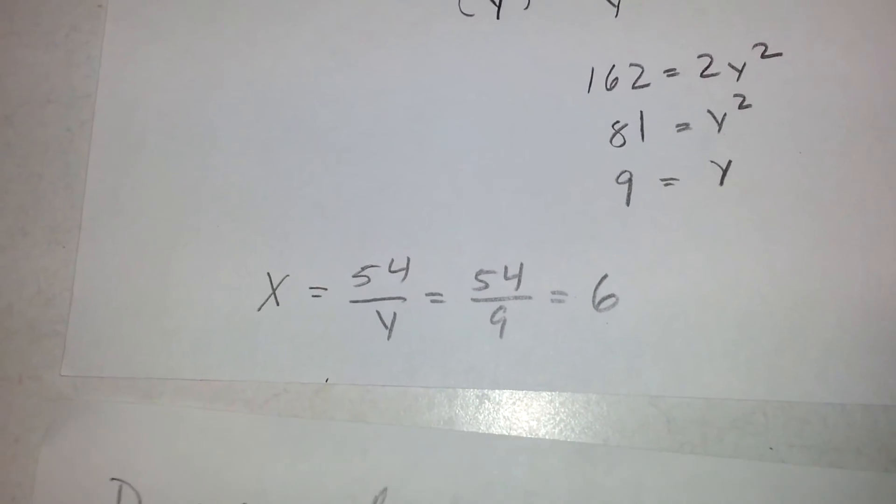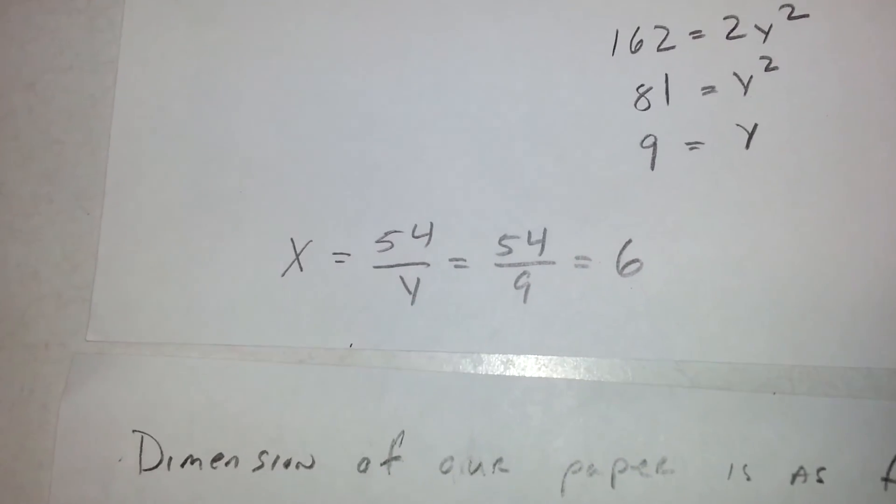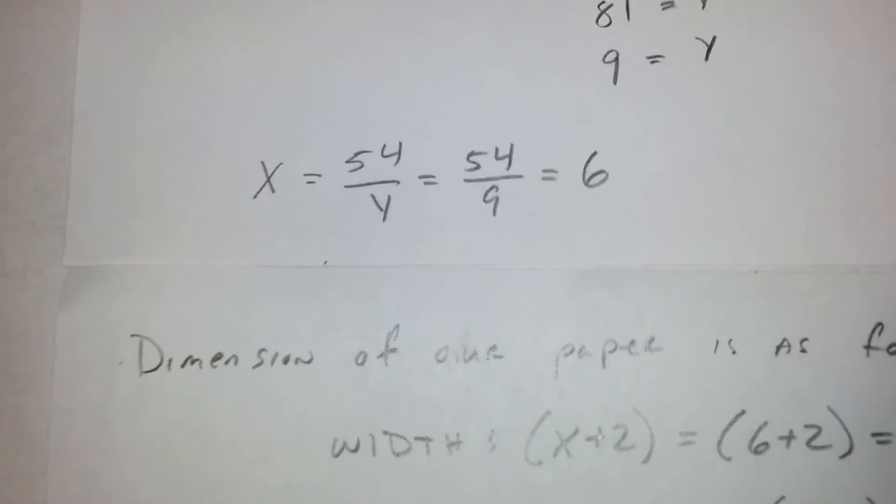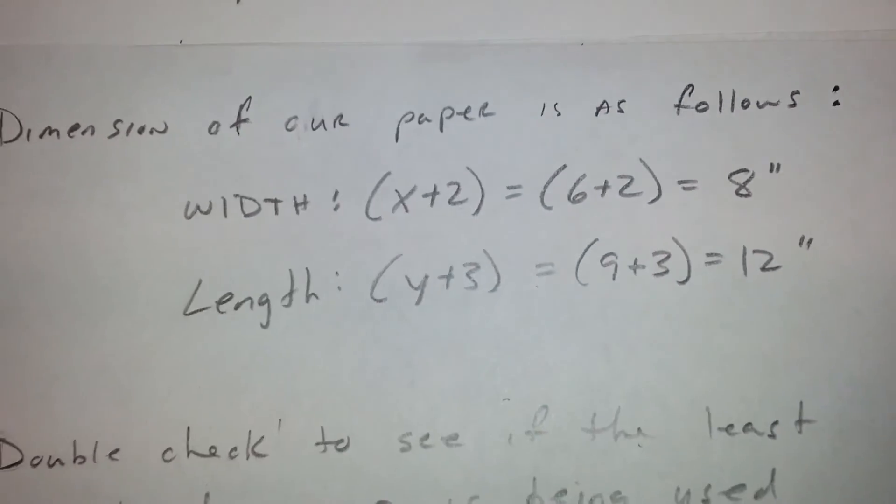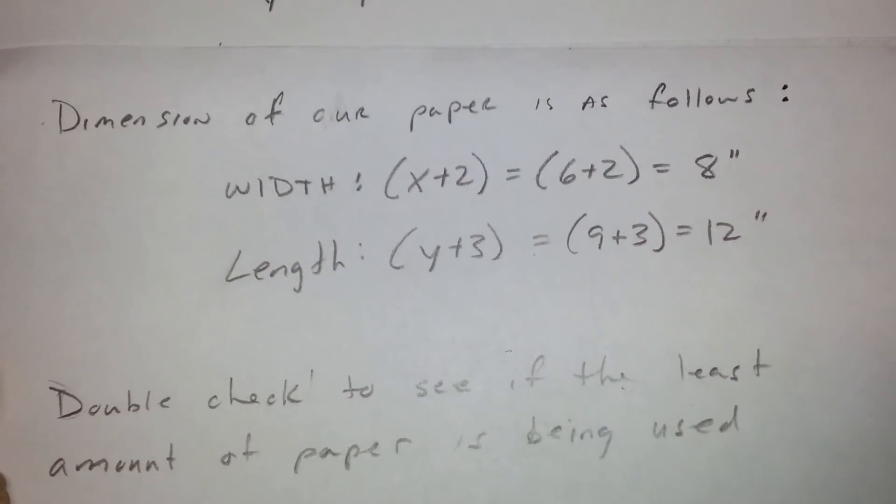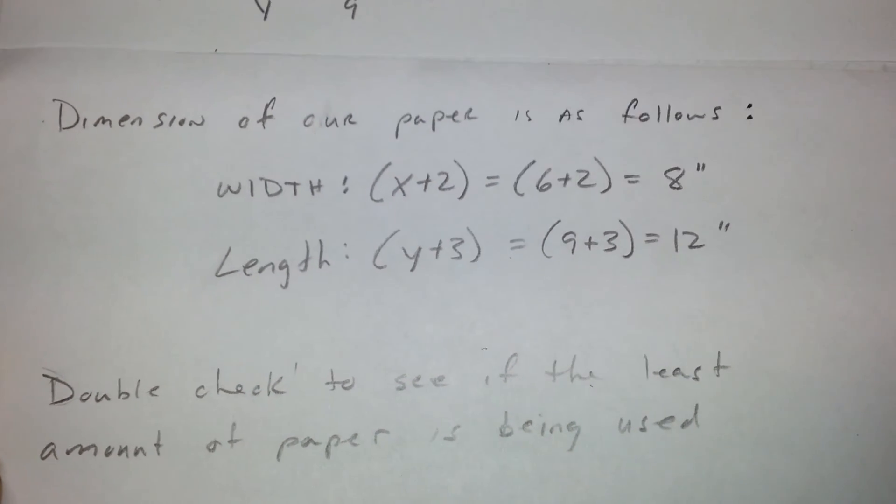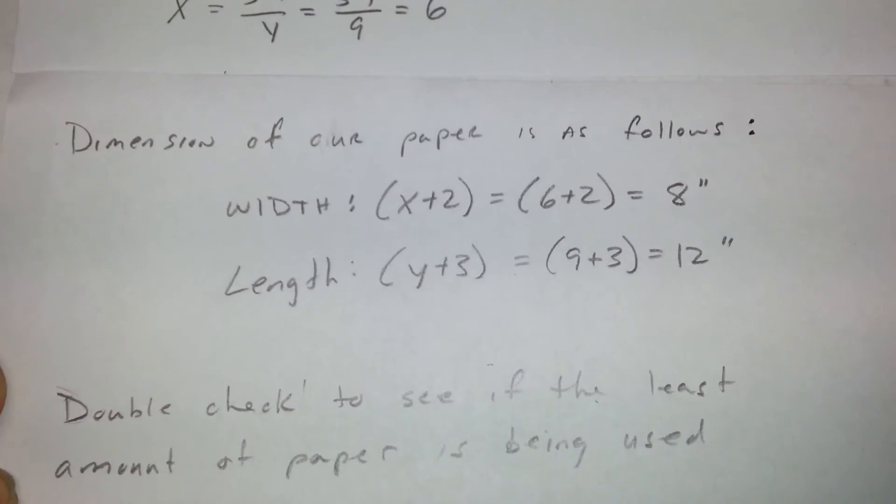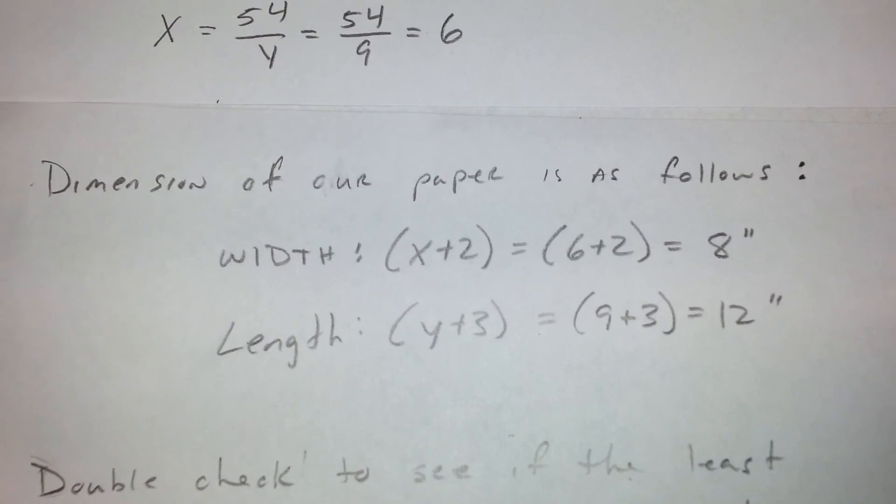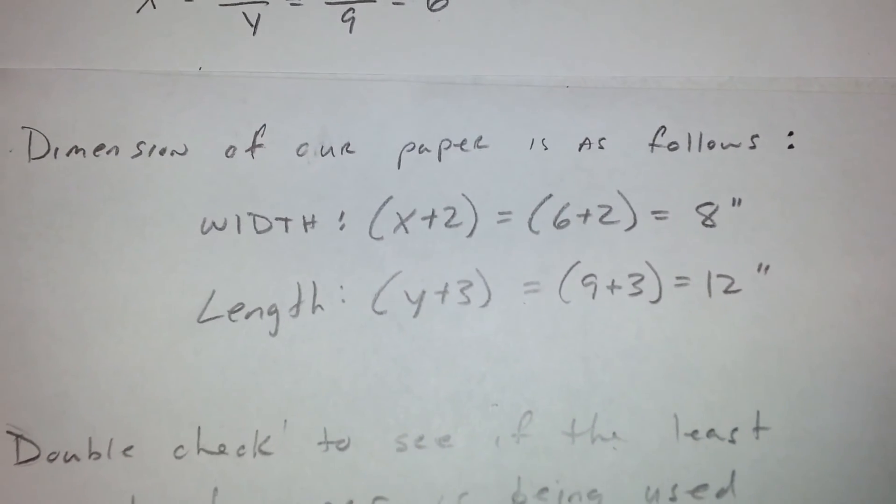Now to find our dimension of our paper, we will plug the x back in. So our width which would be our x plus two will be our six plus two which would be eight inches. And the length would be y plus three which is nine plus three equals twelve inches.